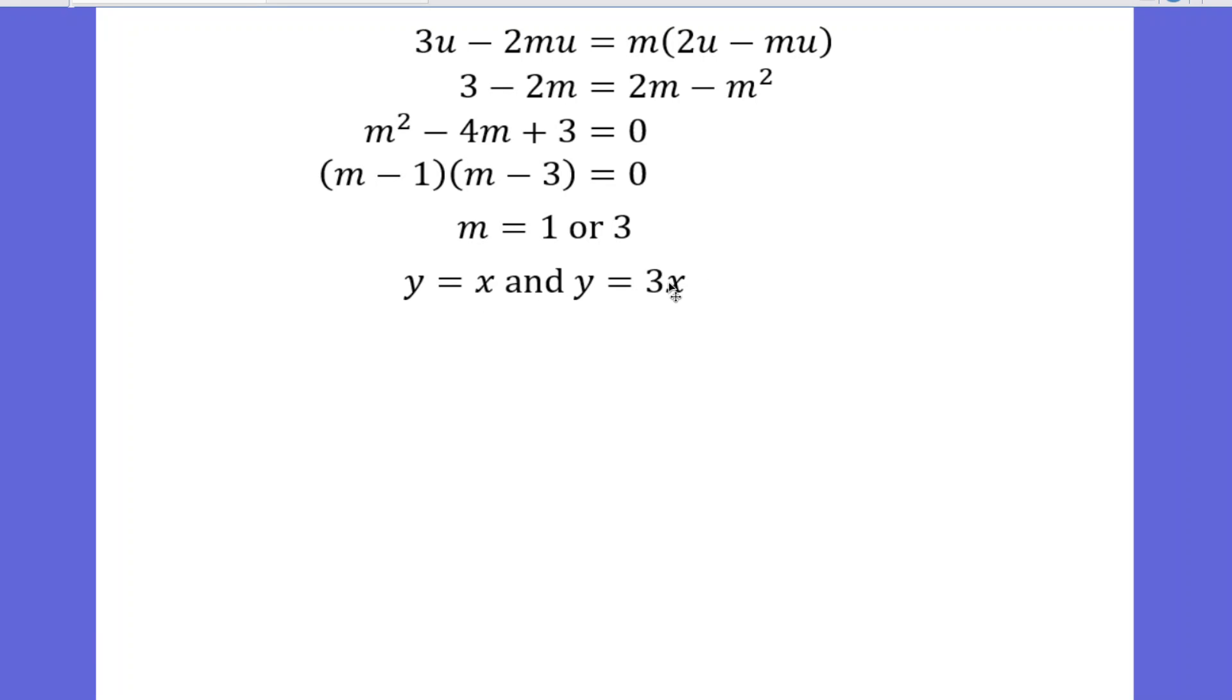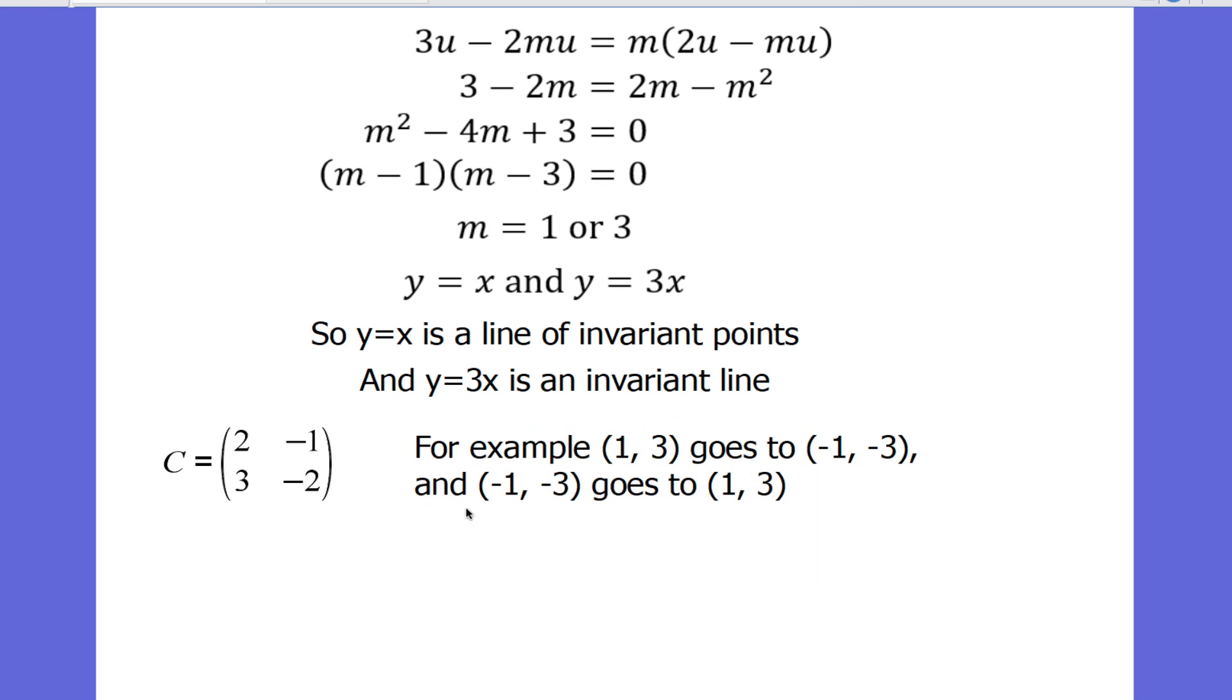Now, when we looked at this earlier on, we found that y equals x was indeed a line of invariant points. But now what we know is that y equals 3x is an invariant line. So we've solved the problem, but let's just check our final answer. What happens to the point 1, 3? Well, we put 1, 3 in here. We get 2 minus 3, which is minus 1. We get 3 minus 2 lots of 3, so we get minus 3.